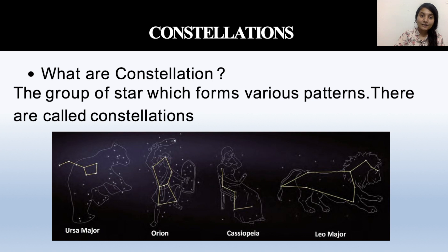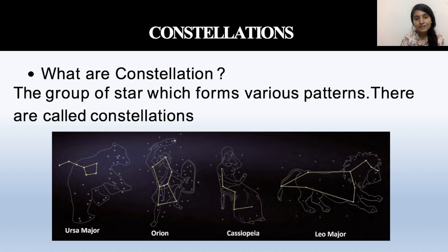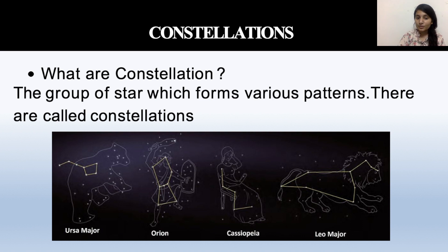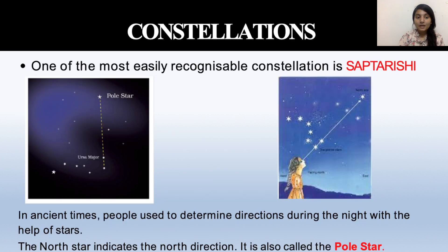Our next topic is constellations. Groups of stars which form various patterns are known as constellations. The most famous one is Saptarishi, which we have all heard about. There are also Ursa Major, Orion, and Leo. These constellations are named by scientists, and one of the most easily recognized is Saptarishi.